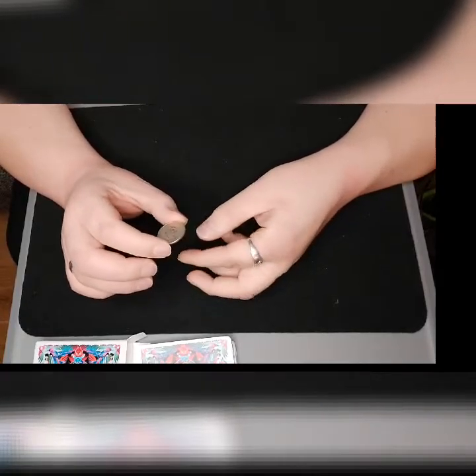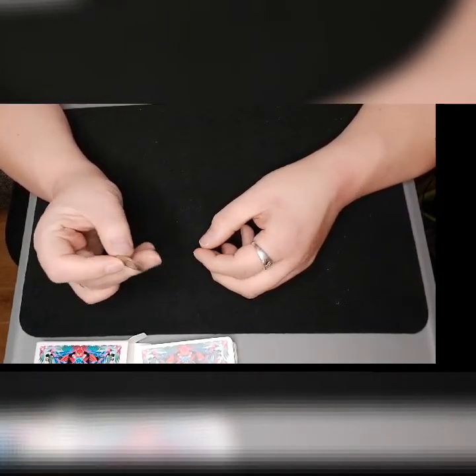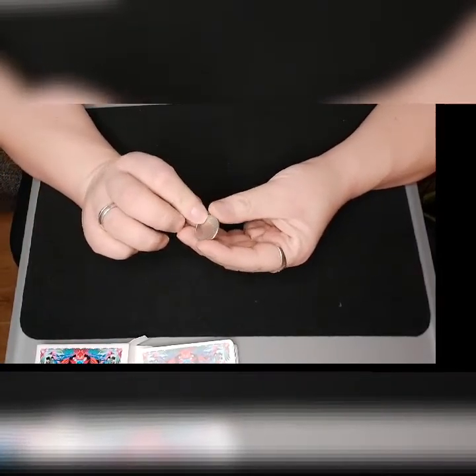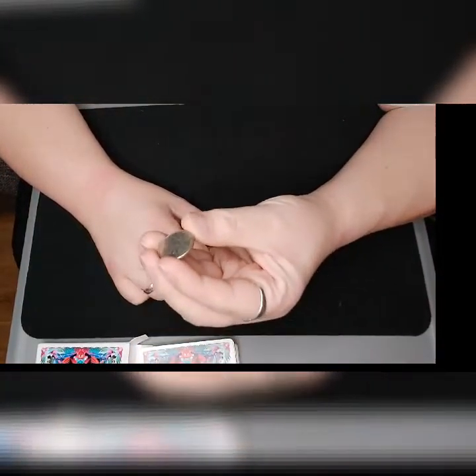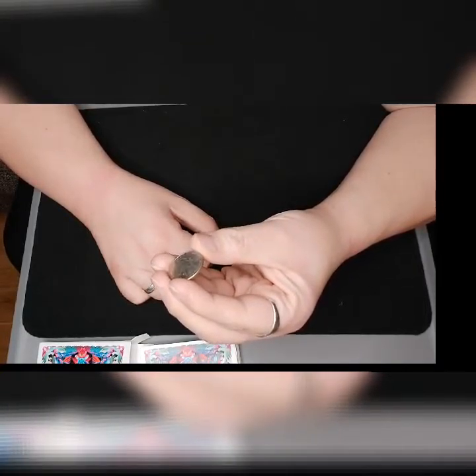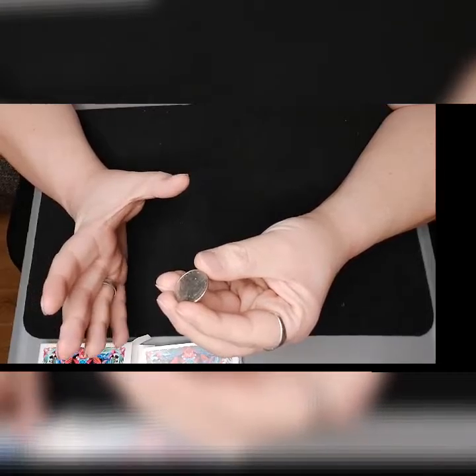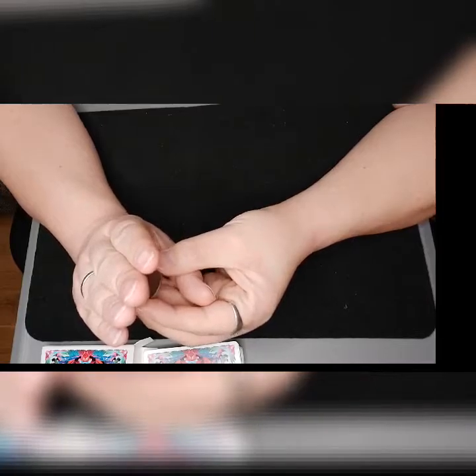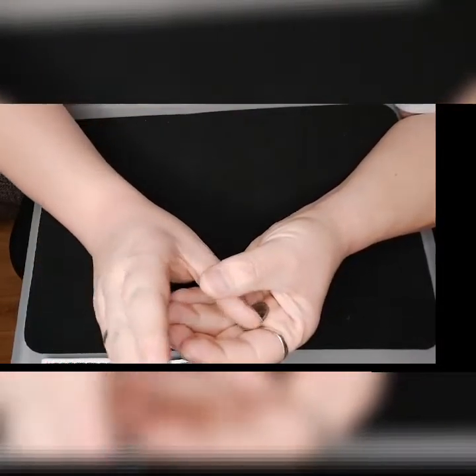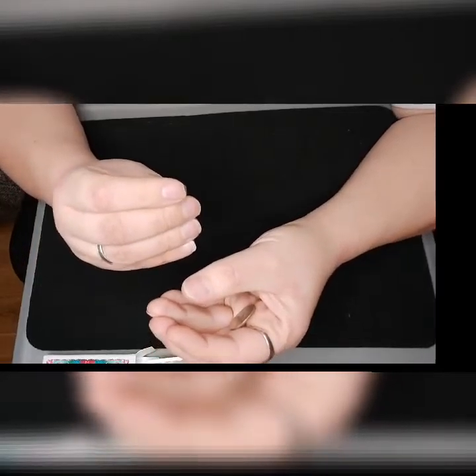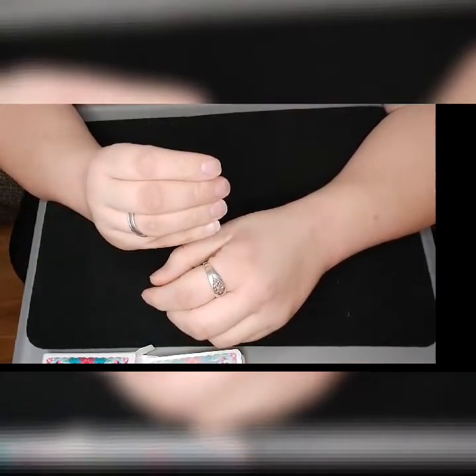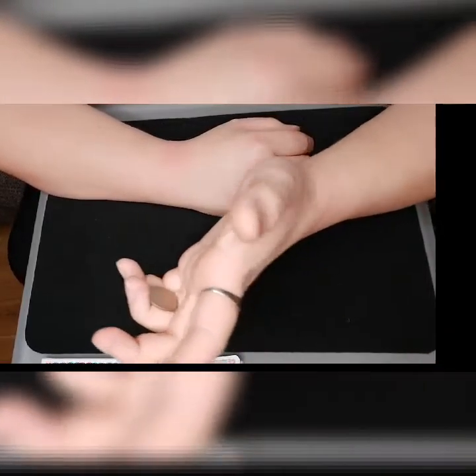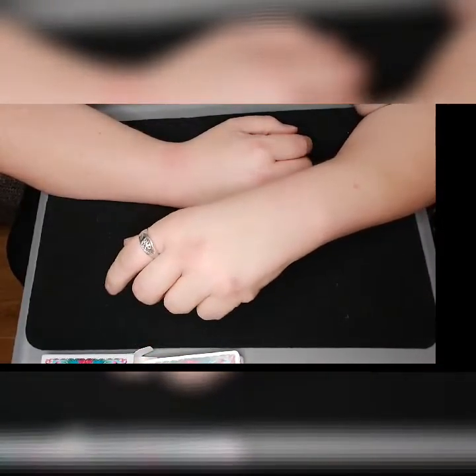We'll start with something easy, which is the French drop. What the French drop is: you grab the coin like so, and your hand comes over under the pretense of grabbing it. What happens is you literally drop the coin from there into your hand, while this one comes over and pretends to take it. That can go into a relaxed finger clip, which is there like that, and can be perfectly relaxed.